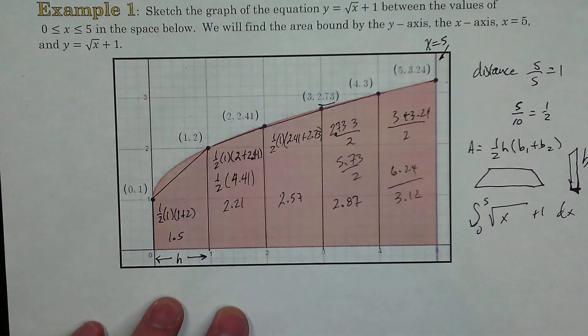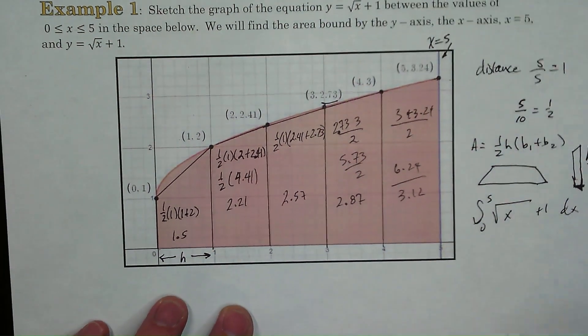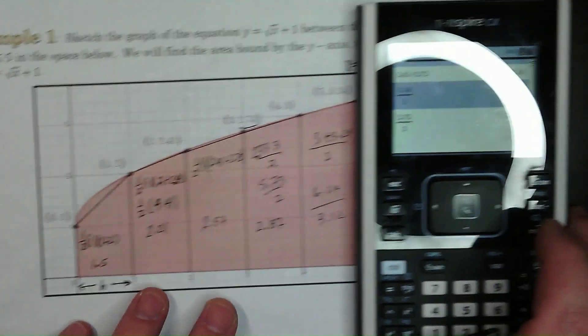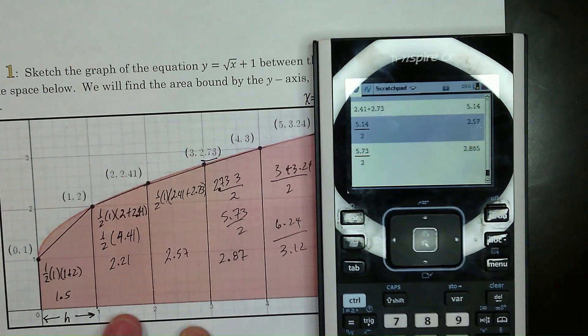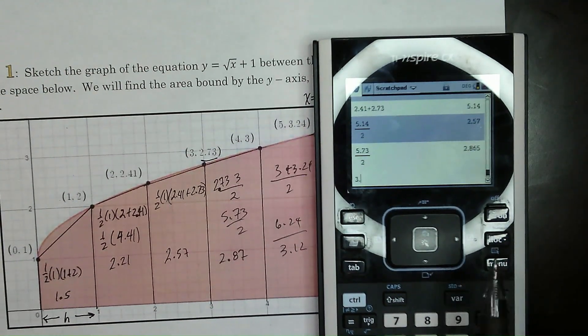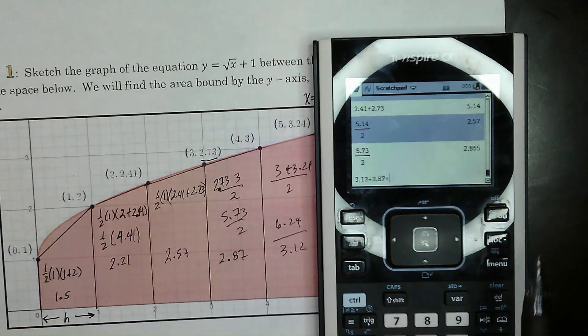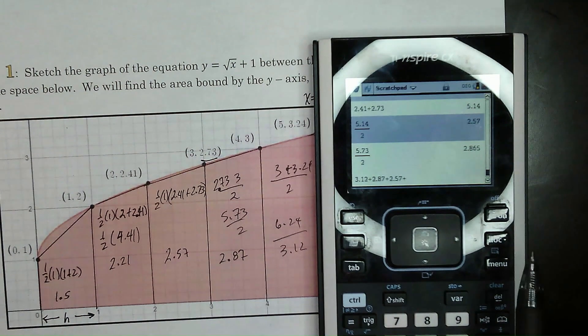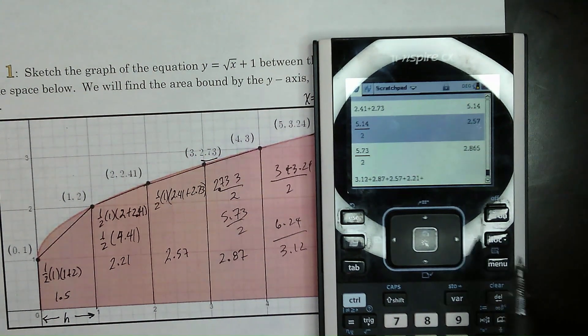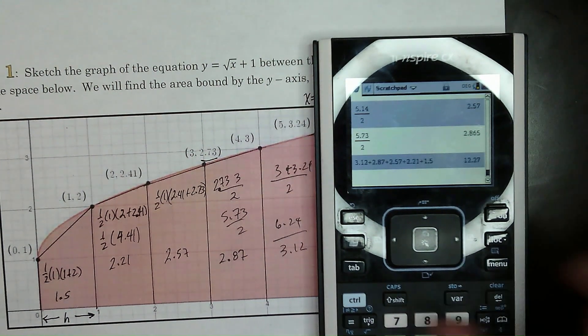So now when we add up each of these trapezoids, what we're going to get is the whole thing. So let's see. You can get that inside the ring light right there. So 3.12 plus 12.27.